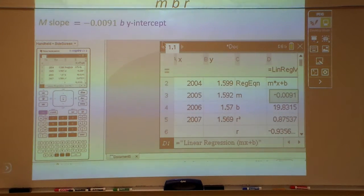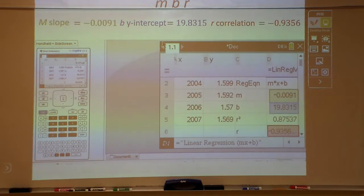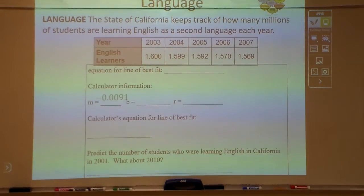There's my negative slope. There's my y-intercept, a little marked up there. And like our correlation, which that would be a strong negative.